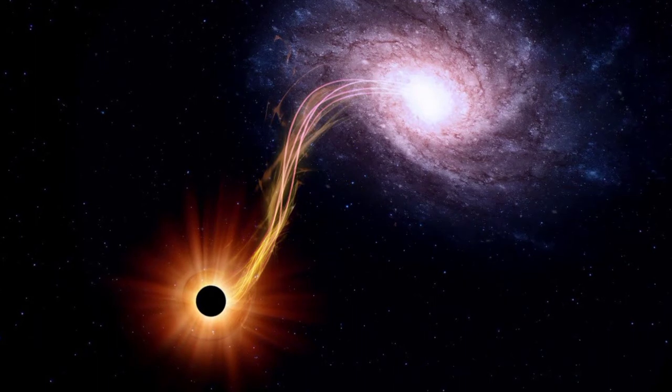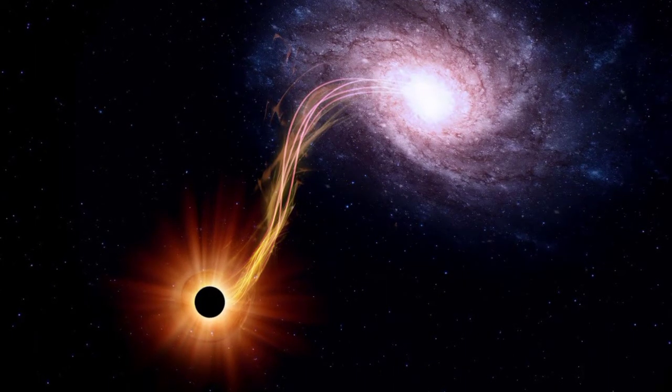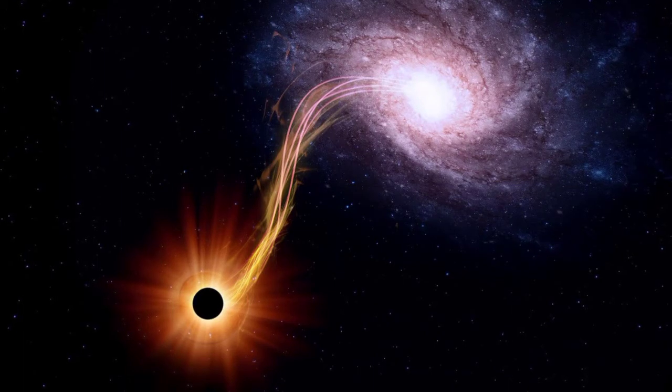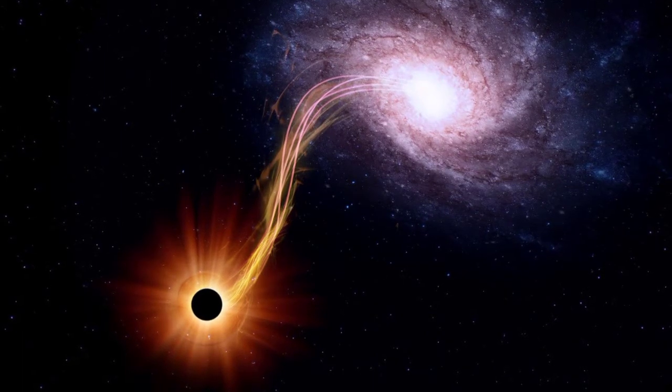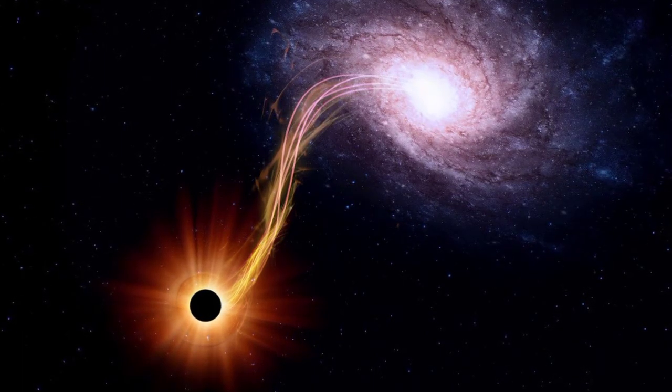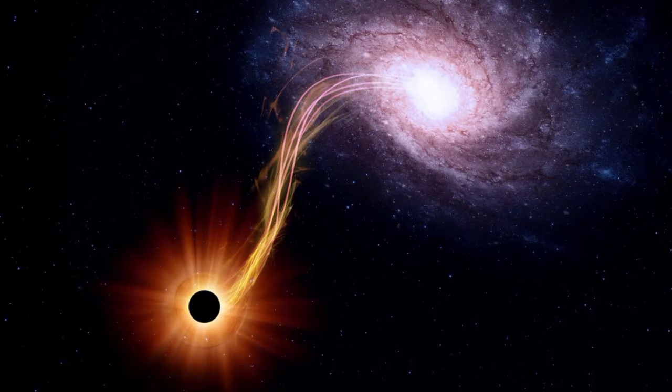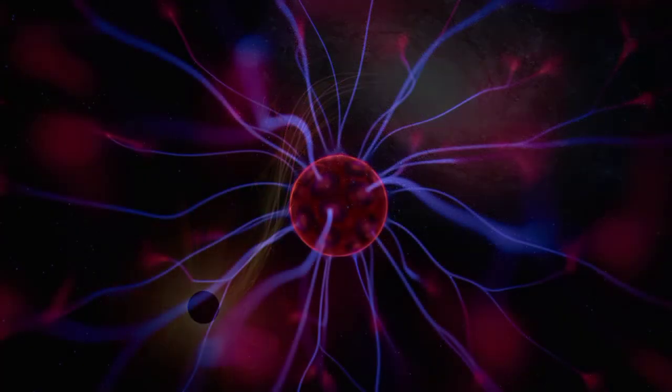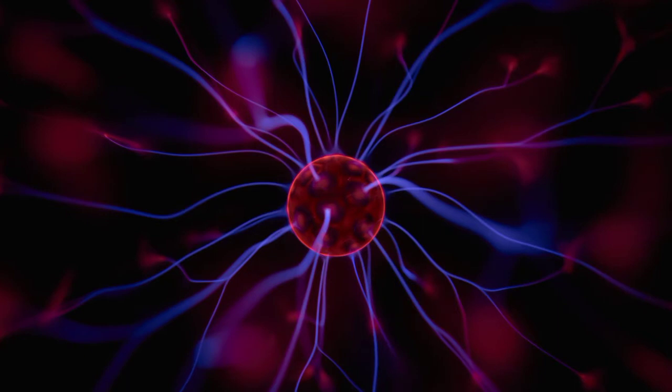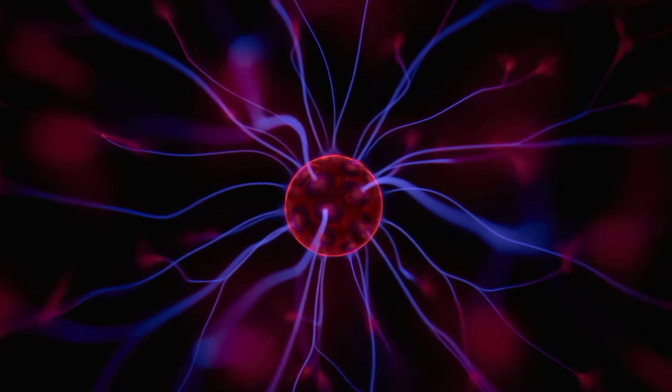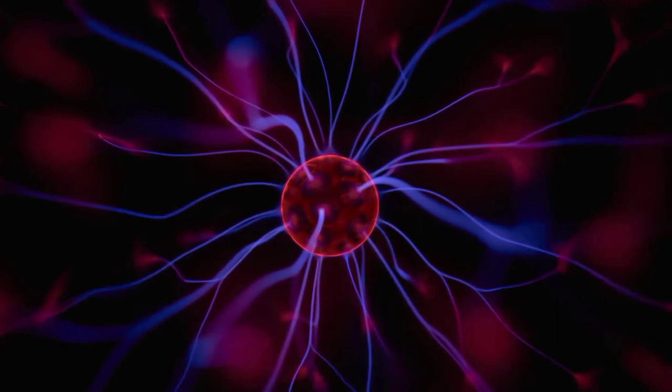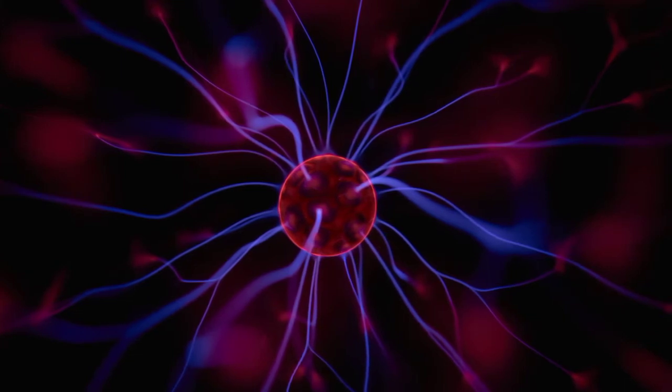Neutron stars are the smallest and densest stellar objects, excluding black holes and hypothetical white holes, quark stars, and strange stars. Neutron stars have a radius on the order of 10 kilometers (6.2 miles) and a mass of about 1.4 solar masses.